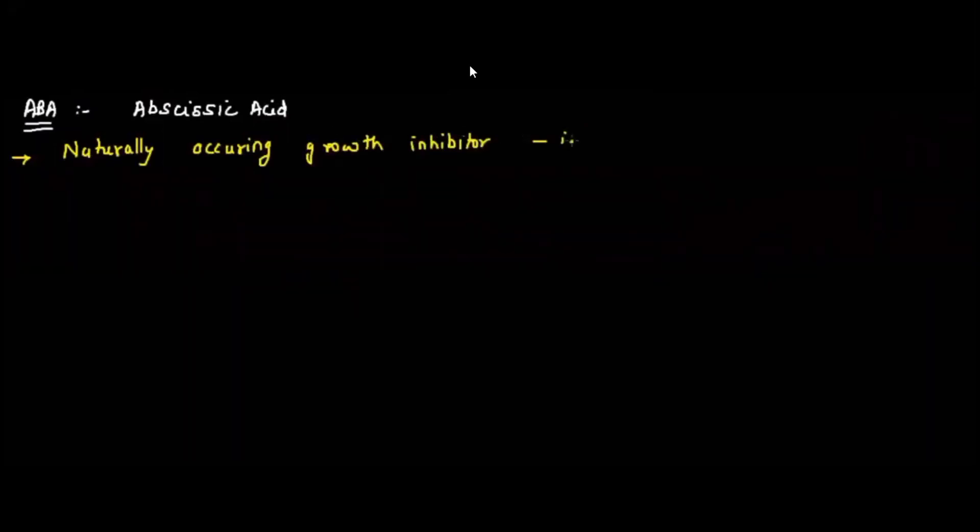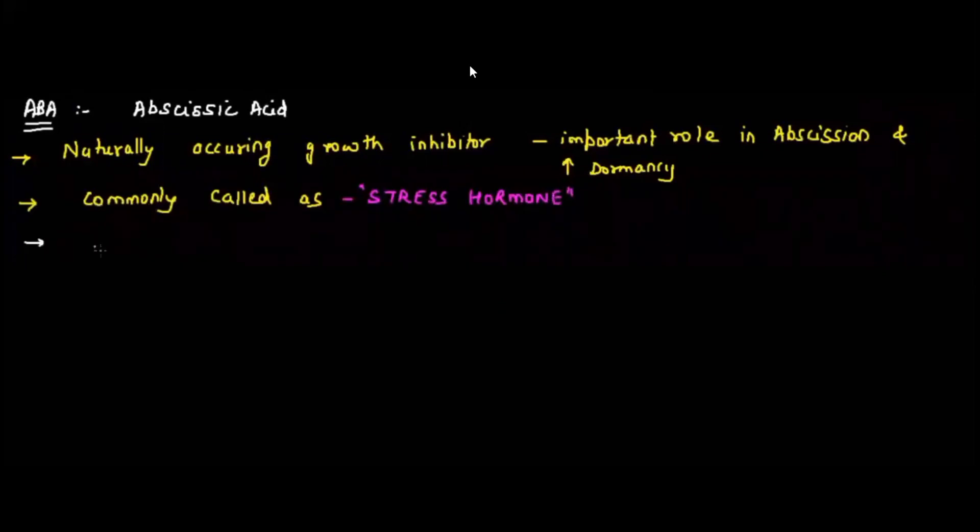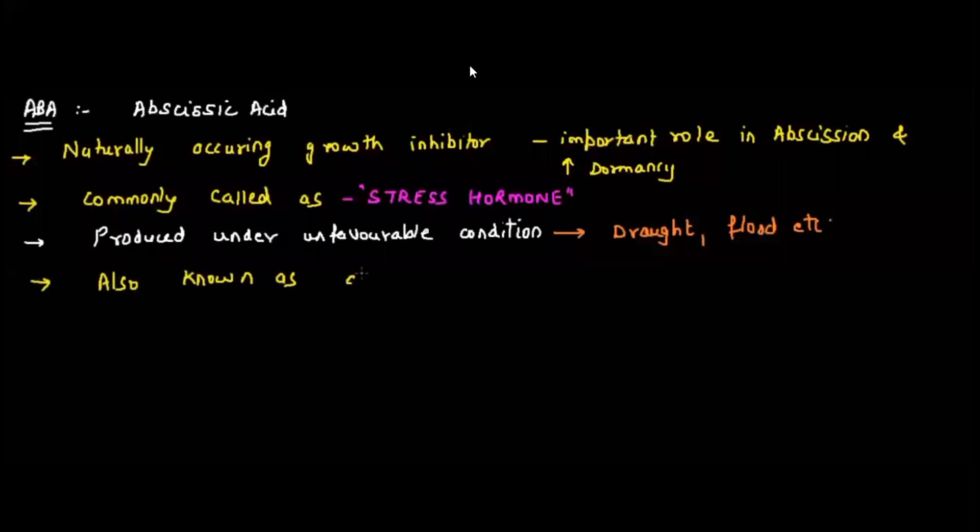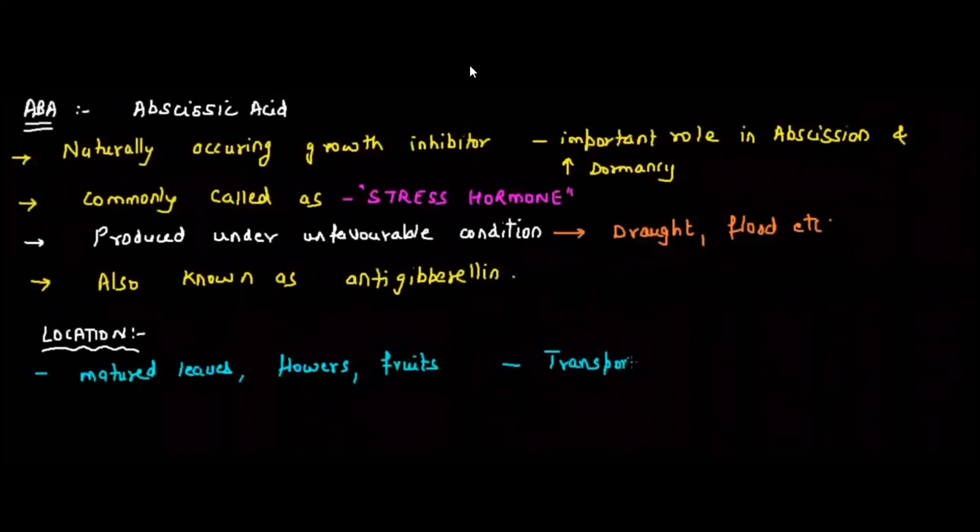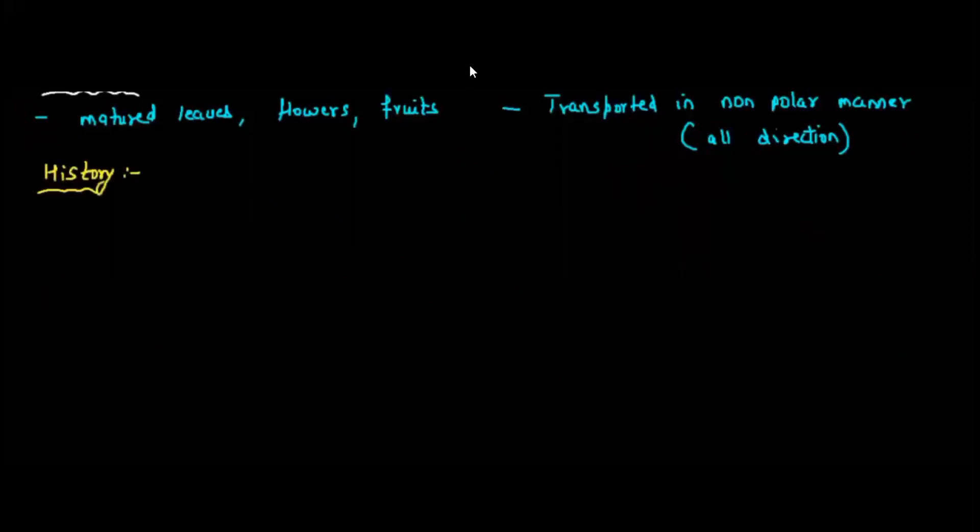Next we have ABA, abscisic acid. It is considered as the villain of the plant hormone because it is naturally occurring growth inhibitor. It plays a very important role in abscission, meaning breaking off leaves, flowers and fruits, and it promotes dormancy. It is commonly called stress hormone because abscisic acid is released during stress when the plant is suffering under unfavorable conditions such as drought, flood, excessive sunlight. It is also known as anti-gibberellin because the functions are opposite to that of gibberellin. Abscisic acid is present in the matured leaves, flower, fruit and is transported in non-polar manner, meaning it is transported in all directions.